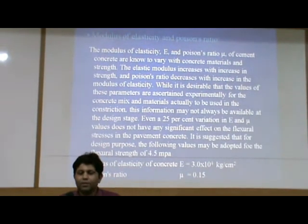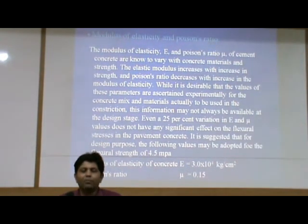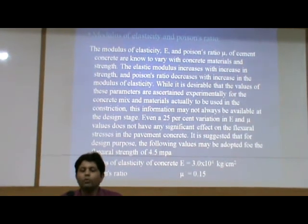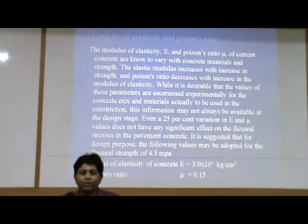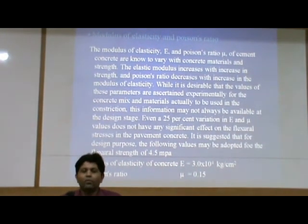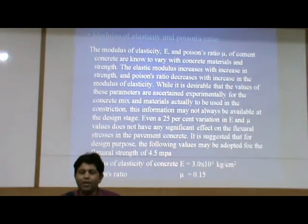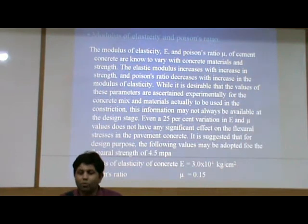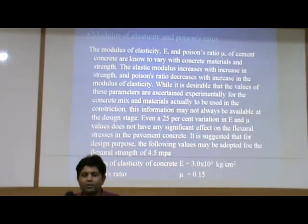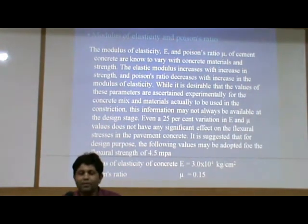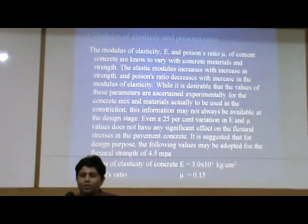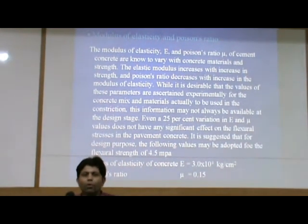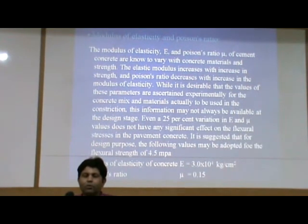It is suggested that for design purposes, the following values may be adopted for a flexural strength of 4.5 MPa, that is 4.5 N/mm squared: modulus of elasticity of concrete E equal to 3.0 times 10 to the power 4 kg per cm squared, and Poisson's ratio mu equal to 0.15.